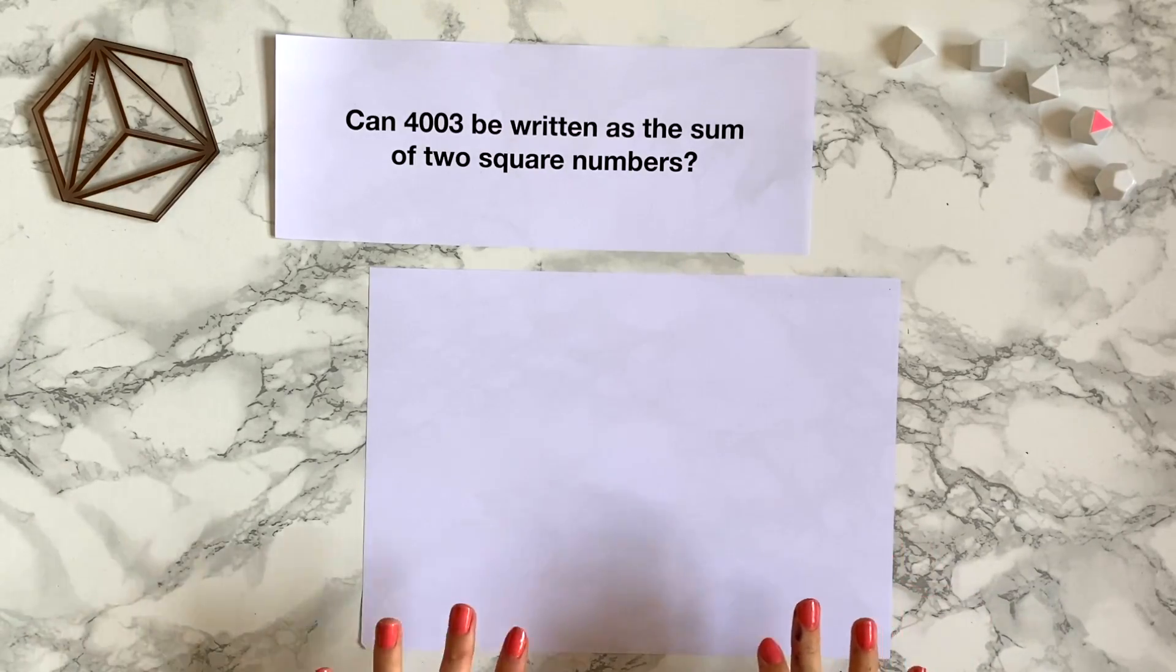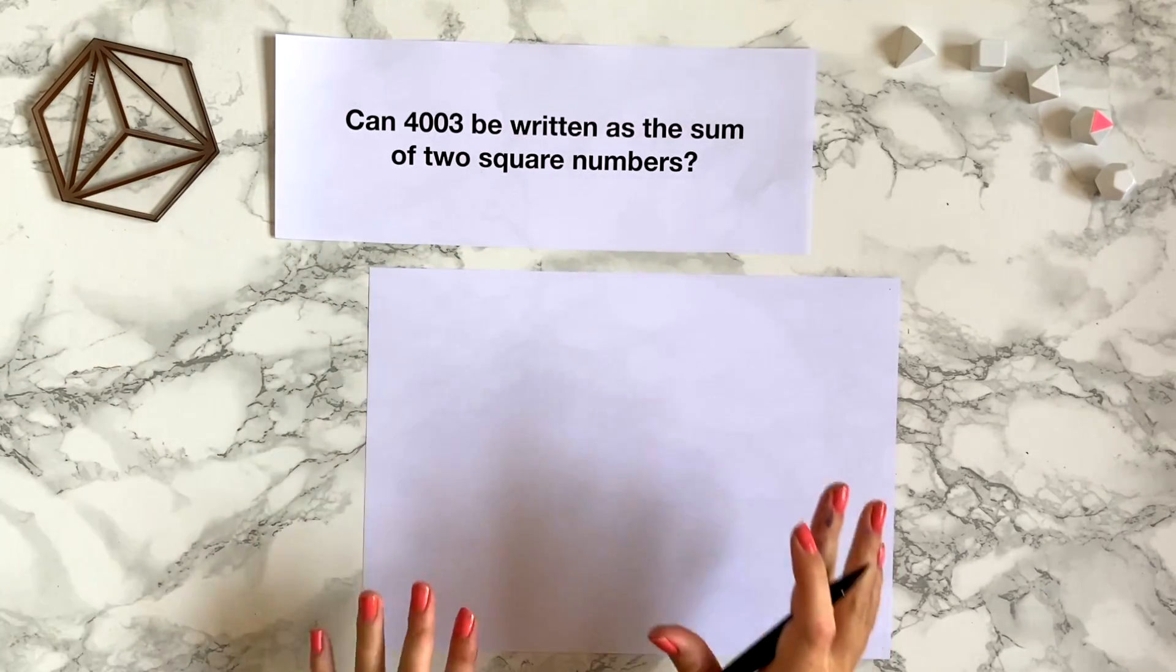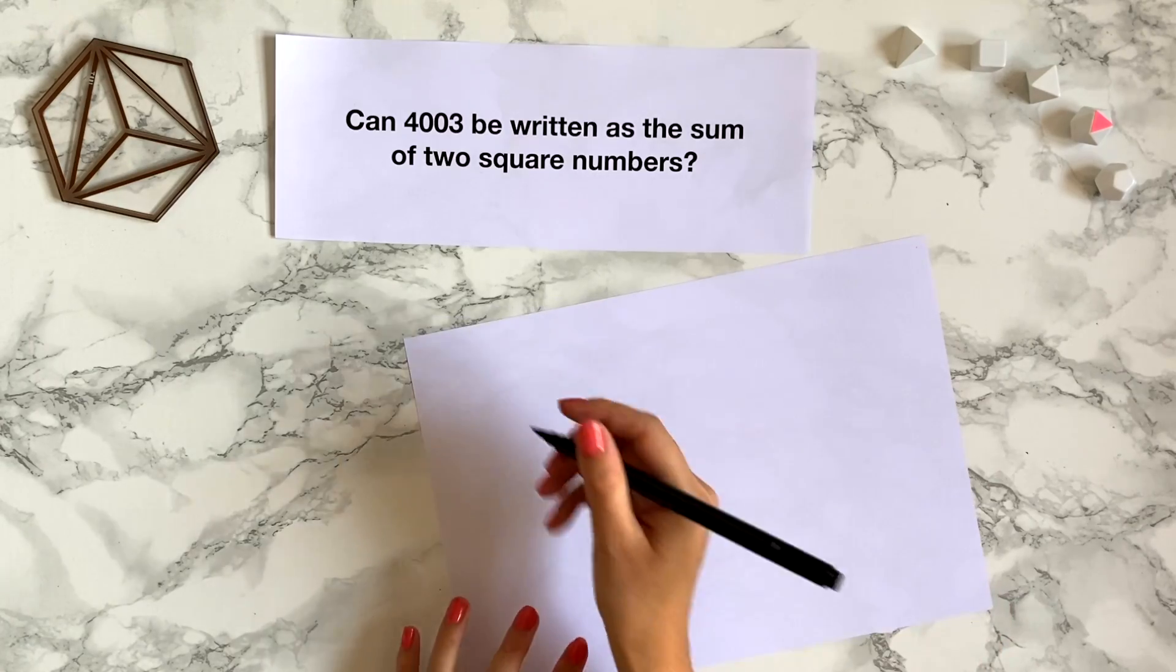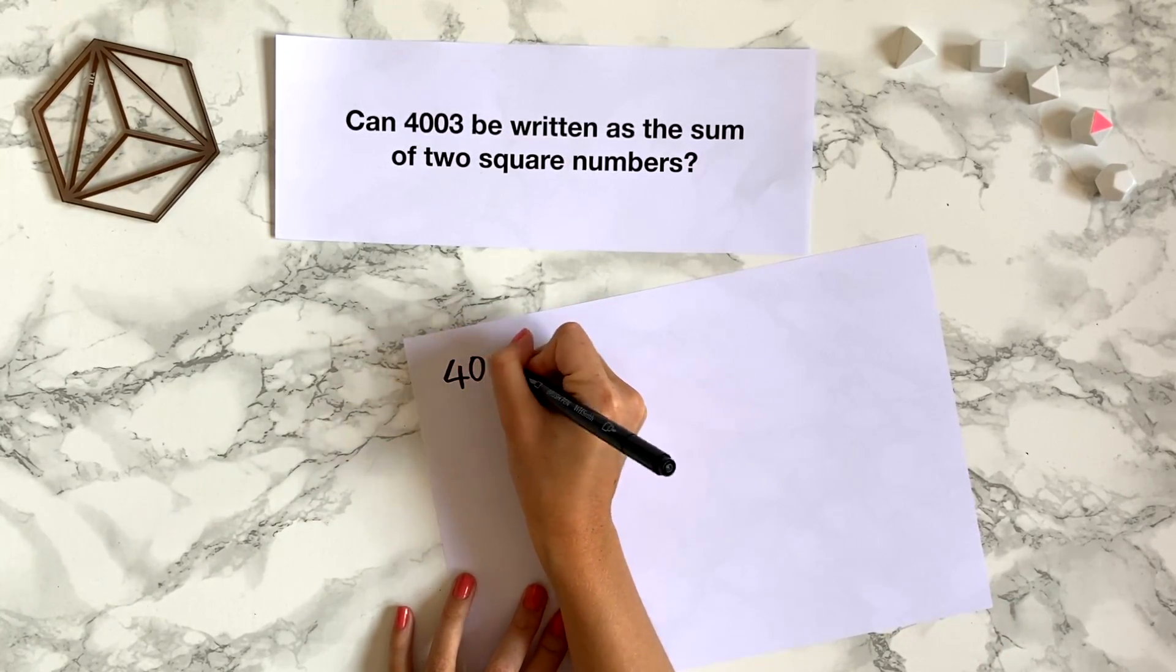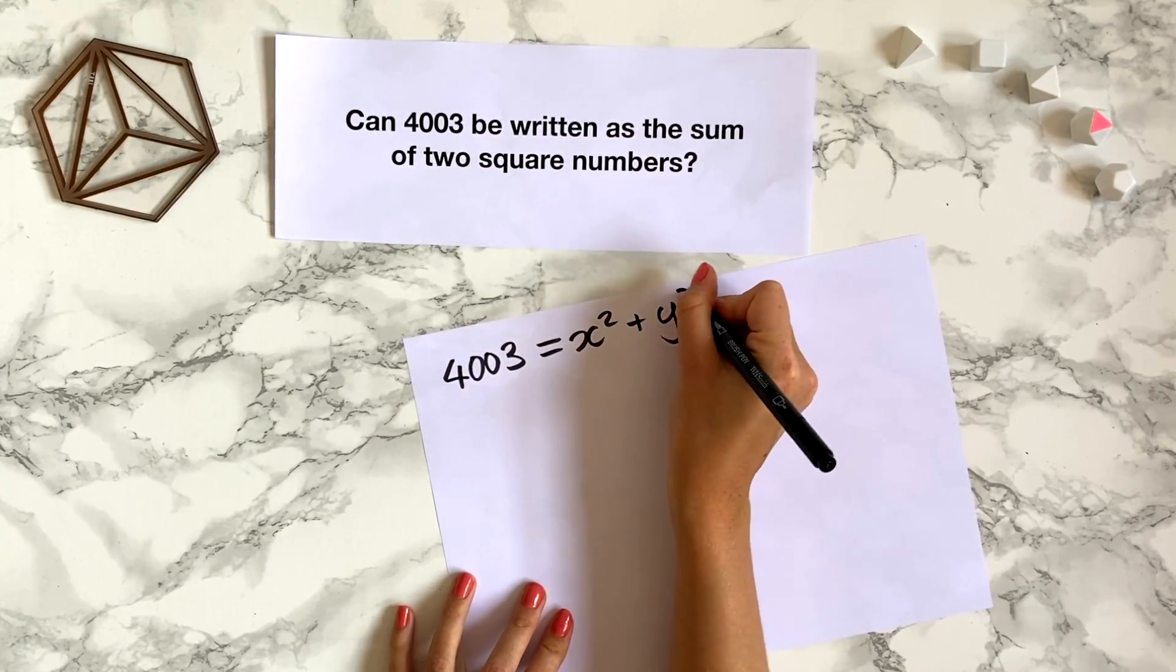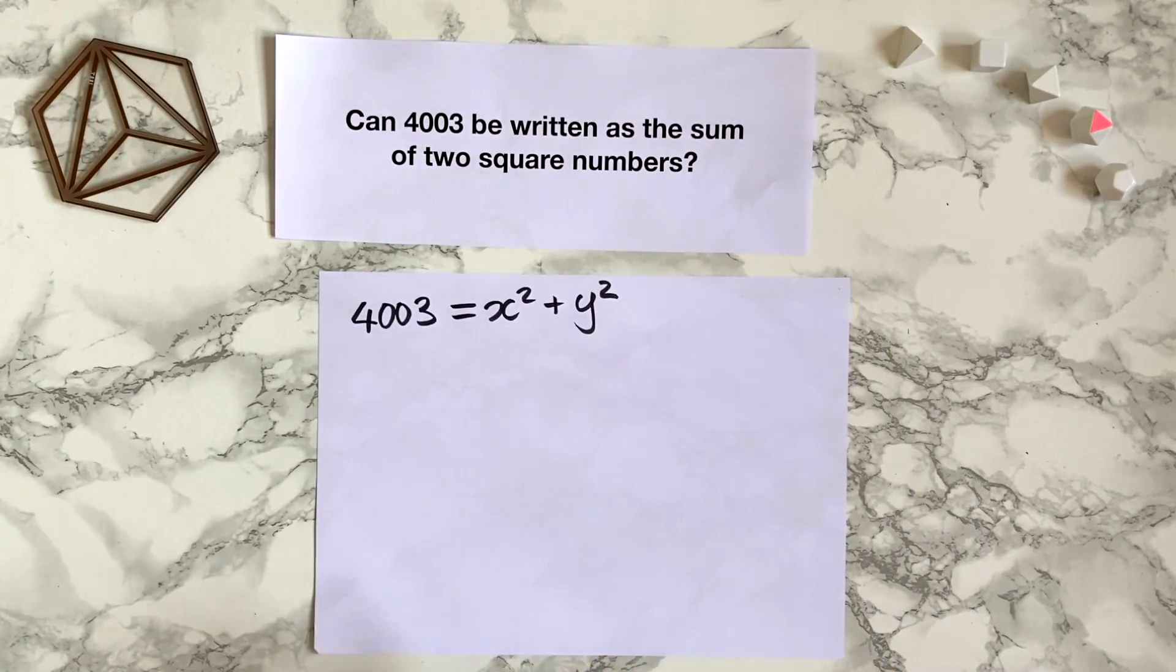So we want to find out if we can write 4003 as the sum of two square numbers. In other words, we want to find out if we can write 4003 as x squared plus y squared where x and y are integers.